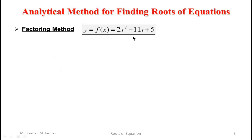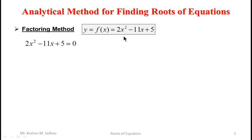There are different methods to find roots of an equation. Let us see some analytical methods to find roots of given equations. The first method is the factoring method. Let us take the same example: 2x squared minus 11x plus 5. We have to find the value of x at which y is equal to 0, so we write 2x squared minus 11x plus 5 is equal to 0.